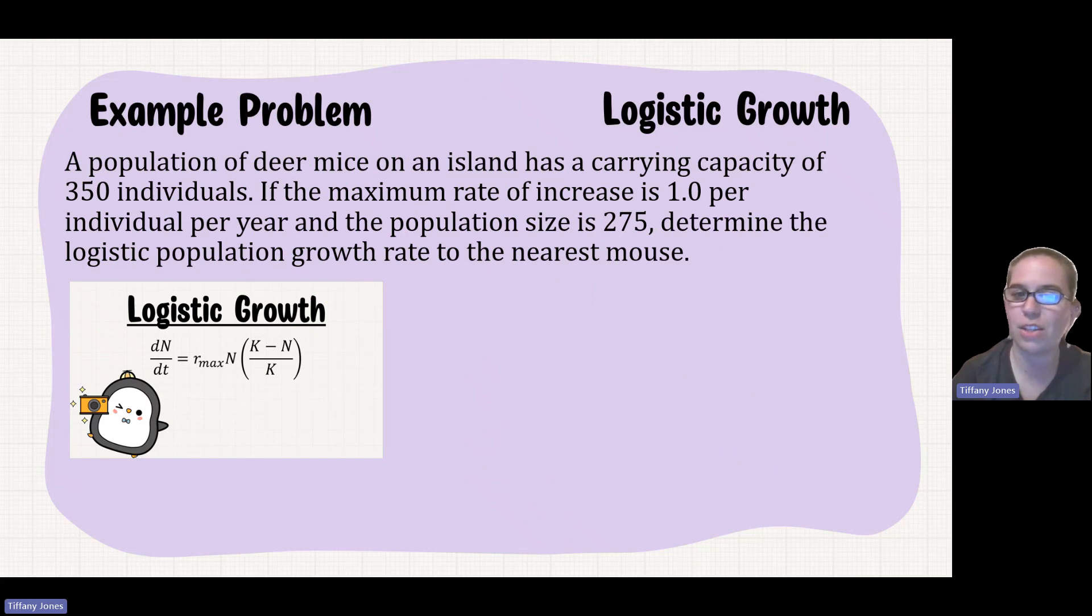A population of deer mice on an island has a carrying capacity of 350 individuals. If the maximum rate of increase is 1.0 per individual per year, and the population size is 275, determine the logistic population growth rate to the nearest mouse.